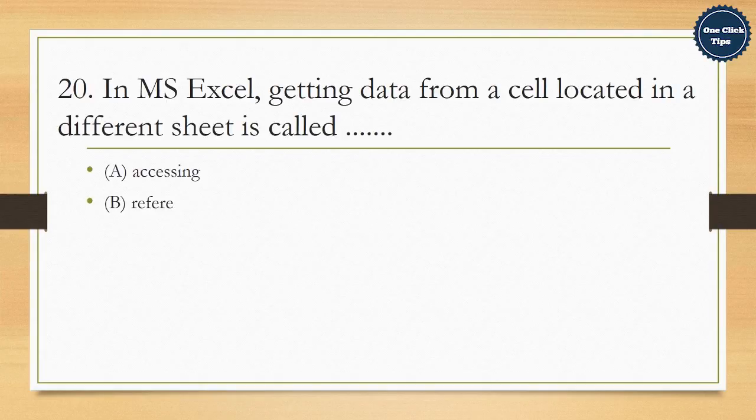20. In MS Excel, getting data from a cell located in a different sheet is called A. Accessing, B. Referencing, C. Updating, D. Functioning. The correct answer is B. Referencing.